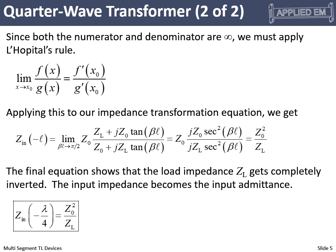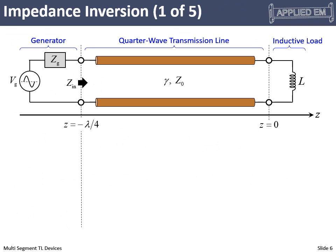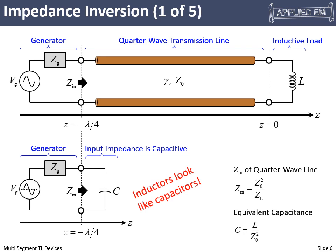In summary, that's what happens through a quarter wave section of transmission line. Let's look at some cases. If we have a section of transmission line that is a quarter wave long driving an inductor, to the generator that looks like a capacitor — because the input impedance is Z₀² divided by the load impedance, and reciprocating the impedance of an inductor gives the impedance of a capacitor. The capacitance the generator sees is L over Z₀².